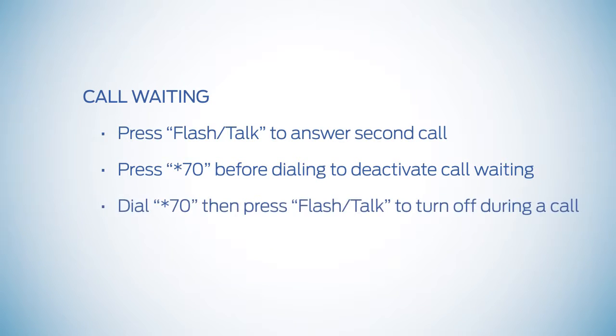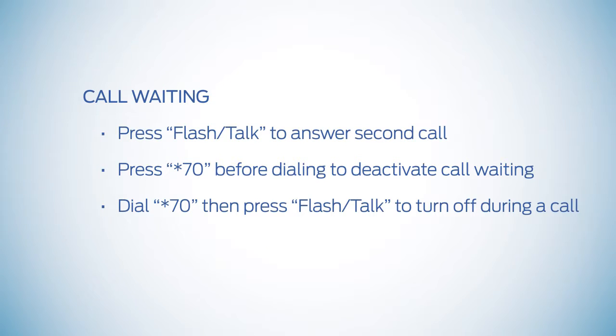To turn off call waiting during an active call, dial star 70, then press flash talk.